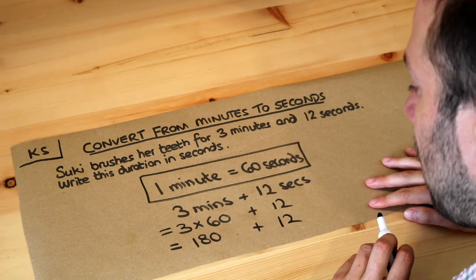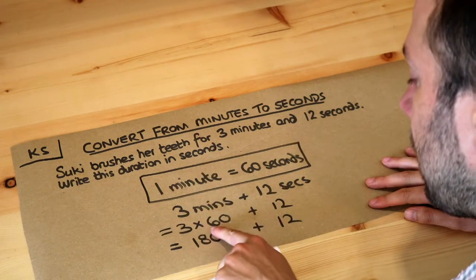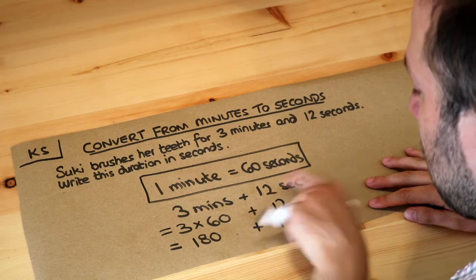So just to recap, we times the 3 minutes by 60 to get how many seconds in 3 minutes. And then we add on the extra 12 seconds that we have.